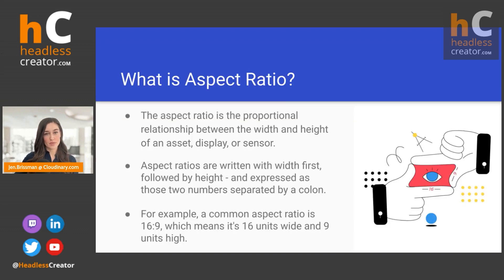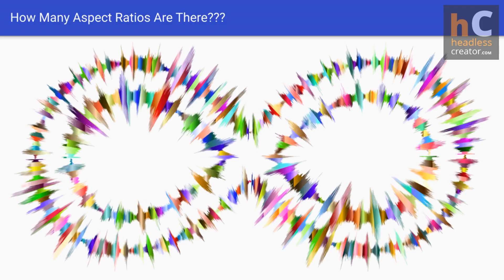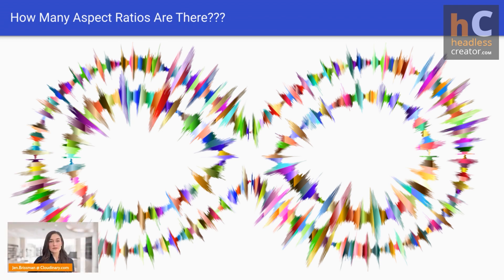So what is aspect ratio? Aspect ratio measures the proportional relationship between the width and the height of an asset, a display, or a sensor. They're written with width first, followed by height — and that's important. It's expressed as two numbers separated by a colon. For example, a common aspect ratio is 16 to 9, which means it's 16 units wide and 9 units high. There are potentially an infinite amount of aspect ratios, but there is a set of standard ones like 16:9 for video or 1:1 for Instagram photos.